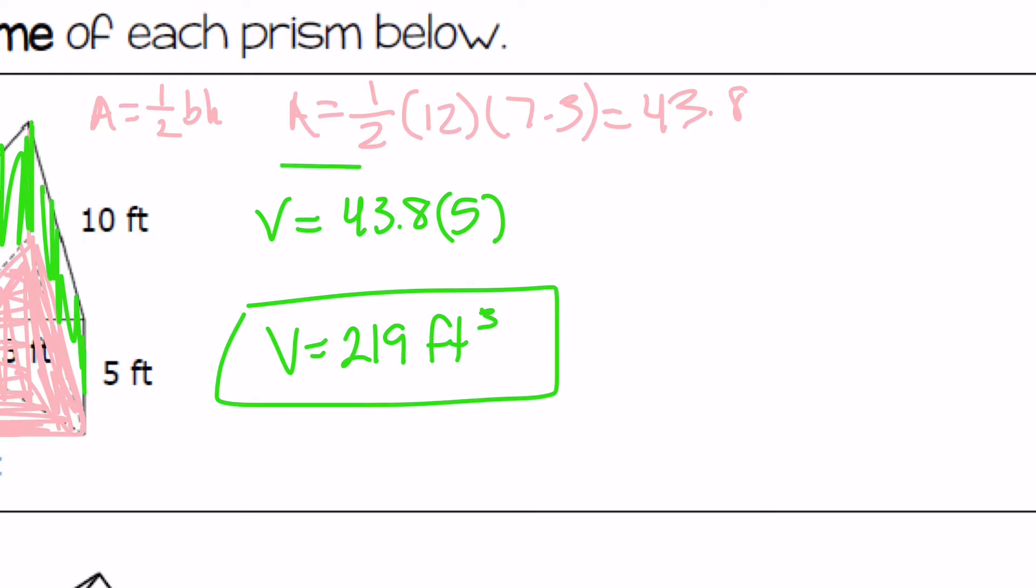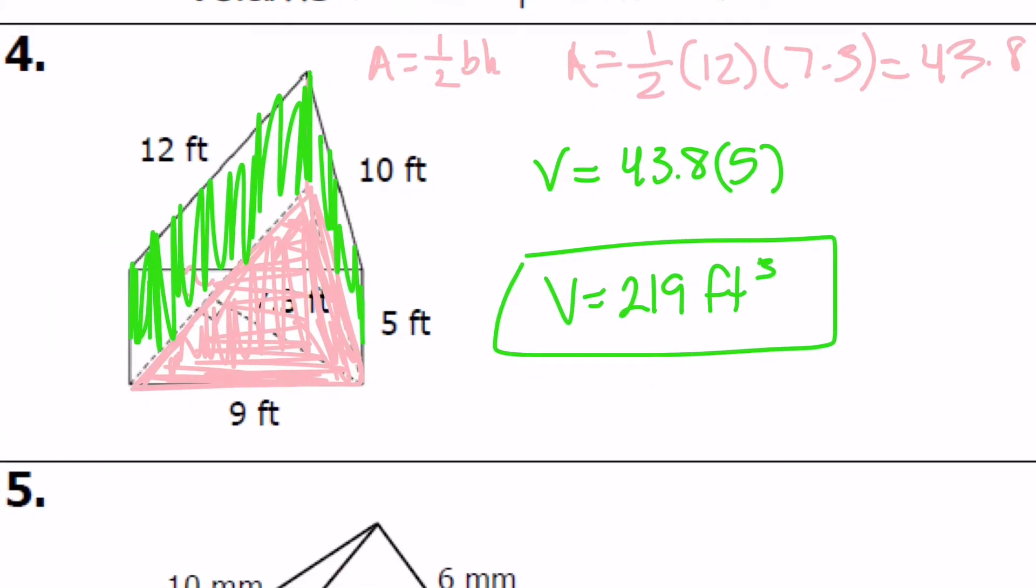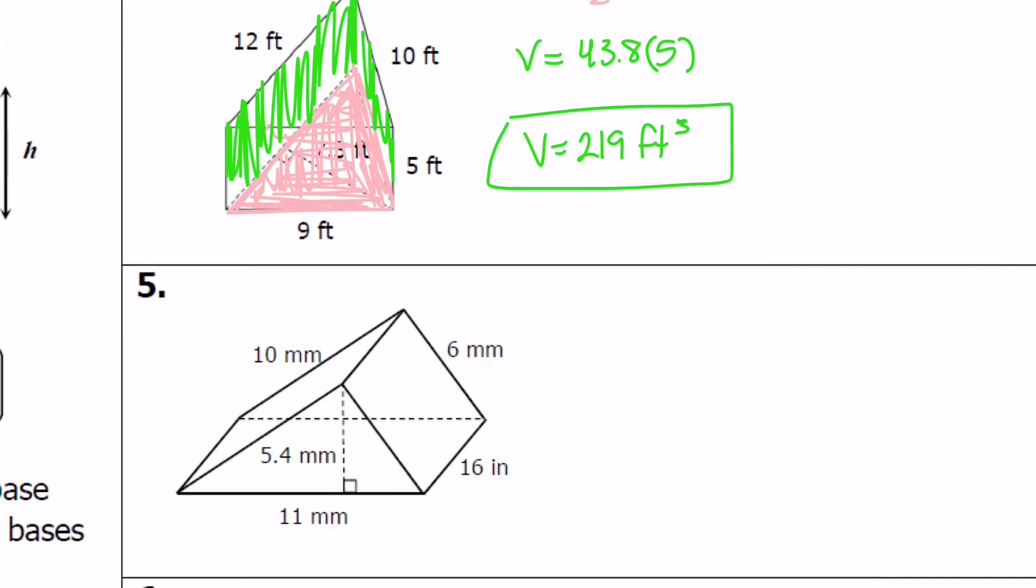So you're still finding the area of the base shape, like you were with finding surface area prisms, but instead of adding it to that lateral area all you're doing is taking it times that height that you found or that they give you. And in this case is this five feet. It's this one here, those are the pieces that connect the two triangles together.